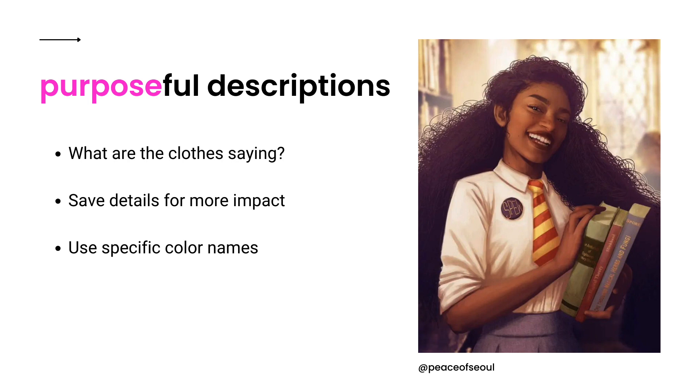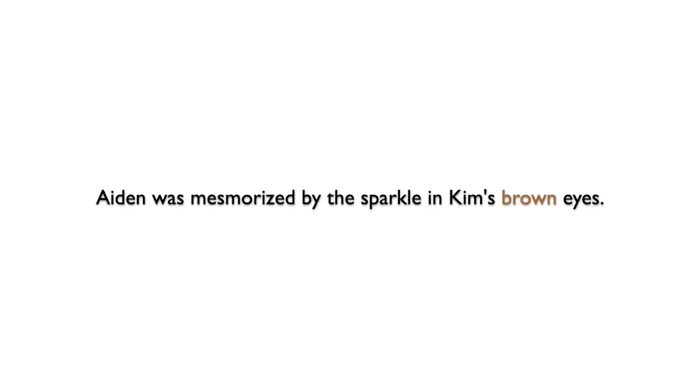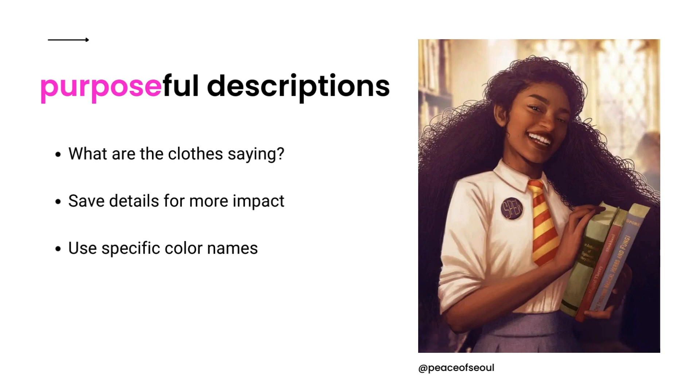Whenever possible, try to save specific physical descriptions for important moments to make them more impactful. For example, 'Aiden was mesmerized by the sparkle in Kim's brown eyes.' Resist the urge to use comparisons when describing colors. It is difficult to make comparisons meaningful, and the color name works just as well. I like to use specific color names whenever possible. Instead of dark blue, light purple, or light brown, you could use azure, lavender, and bronze. When used sparingly, obscure words can add zest to your story.